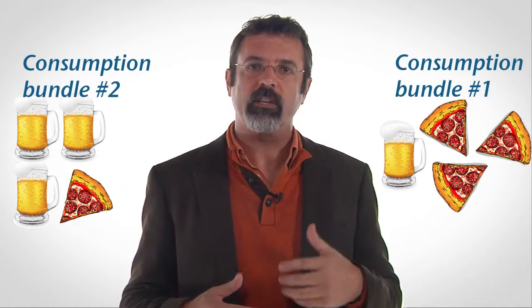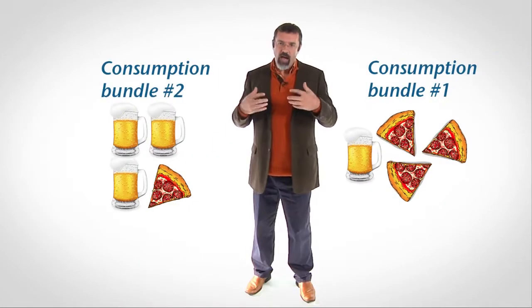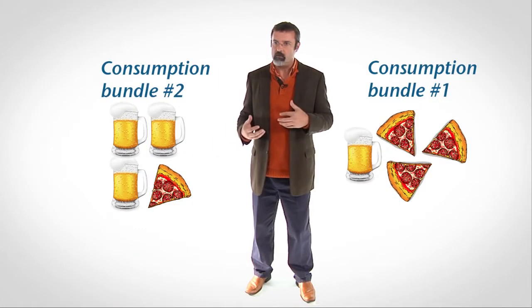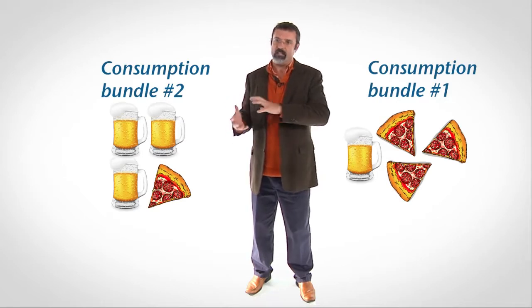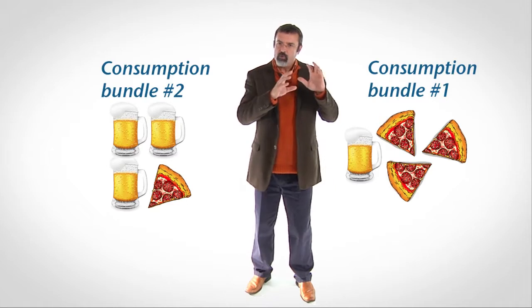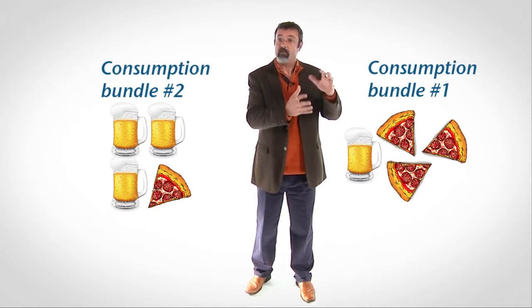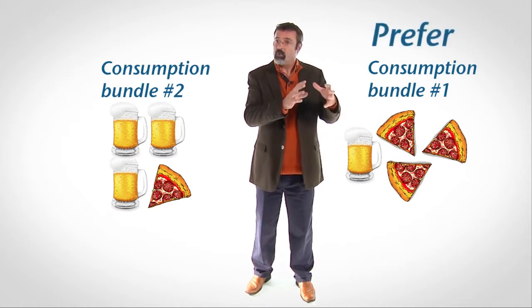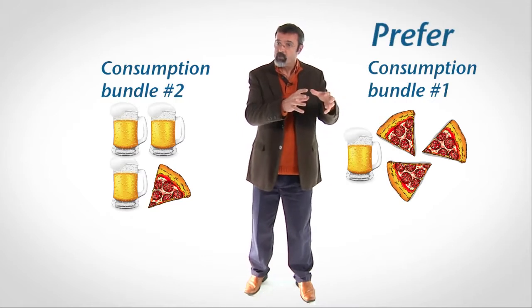To dig deeper into consumer choice, suppose someone offers you a choice between one beer and three slices of pizza for free, and three beers and one slice of pizza, also for free. The combination of beer and pizza is called a consumption bundle. You have the choice between two different consumption bundles — one has more pizza and less beer, and the other has more beer and less pizza. If you choose the first consumption bundle, you are said to prefer it to the second.